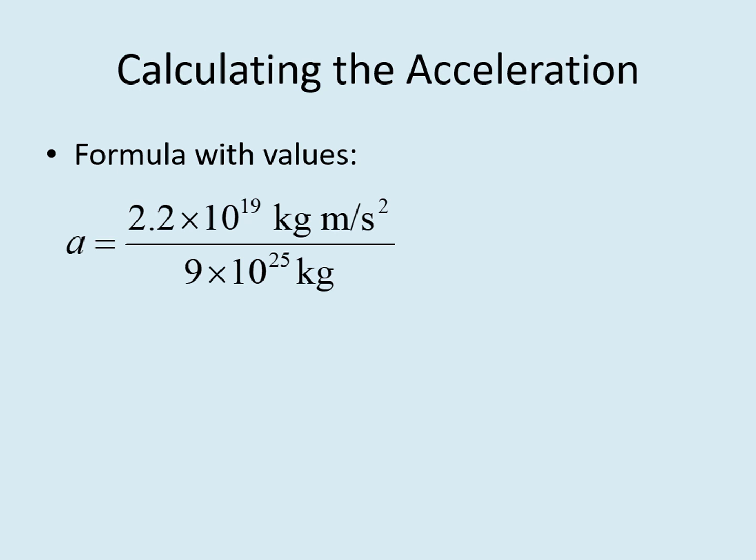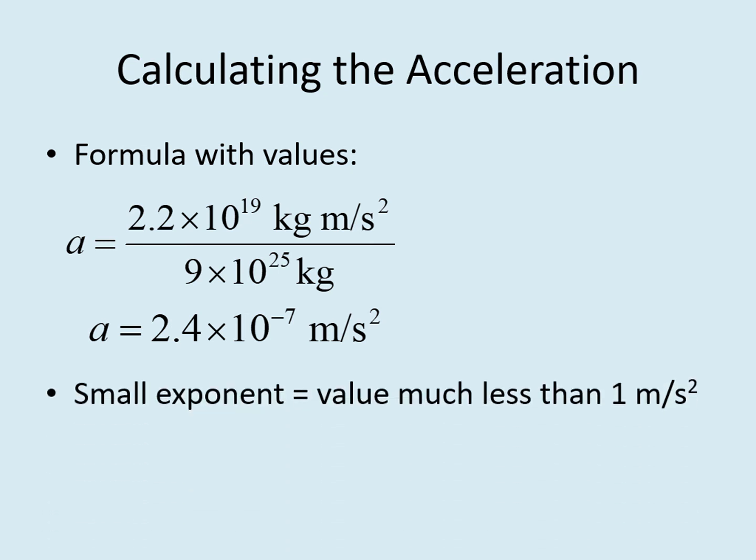At this point, we do what the equation says: divide the force by the mass. Remember to pay attention to the exponents. It's likely that the exponent on the top of the fraction will be smaller than the exponent at the bottom. That means that when you divide them, the answer should have a negative exponent. Or possibly, your calculator will show it with no exponent, but the value is much less than 1. Either is correct, although it's usually easier to read if you have the exponent in there.